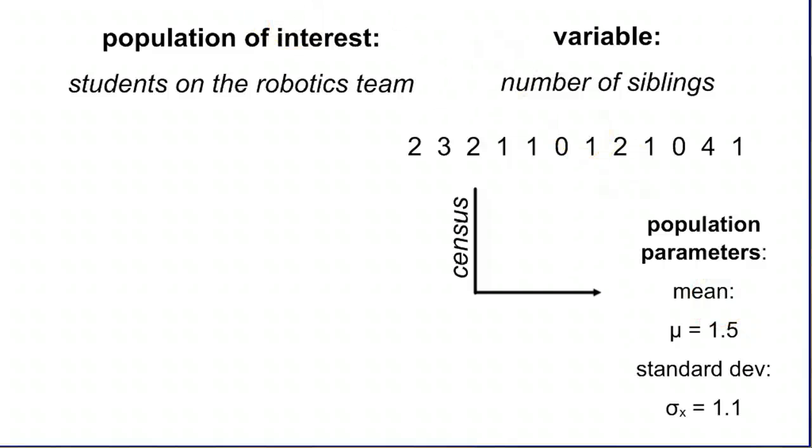For example, the mean. The average number of siblings for students on the robotics team, we take all these numbers, add them up, divide it by 12, we get an average of 1.5. The standard deviation, punch these in your calculator, your calculator will tell you the standard deviation is 1.1. That's a measure of how spread apart these numbers are. The reason these are called parameters is because it tells you about the entire population. So P for parameter, P for population. You'll also notice the symbols. We use these Greek symbols when we're talking about parameters, and I'll show you a slide that breaks some of that down a little bit later.